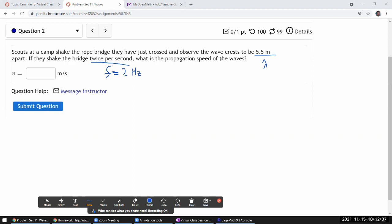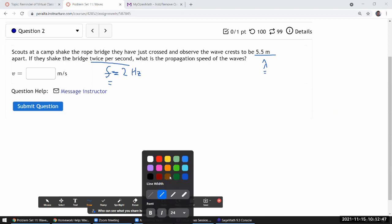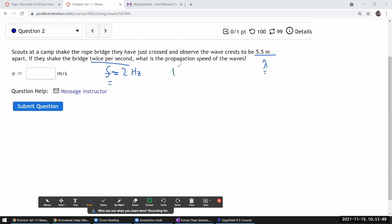So we are using the same relationship between wavelength, frequency, and wave speed, which is the wave speed is given by frequency times wavelength. And again, you can remember this relationship...